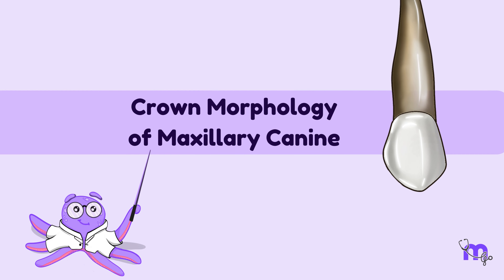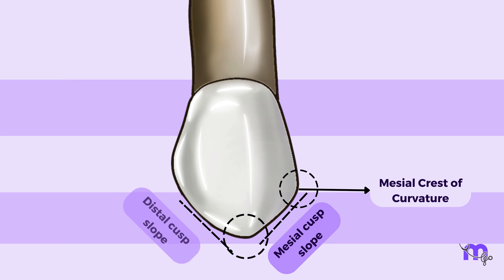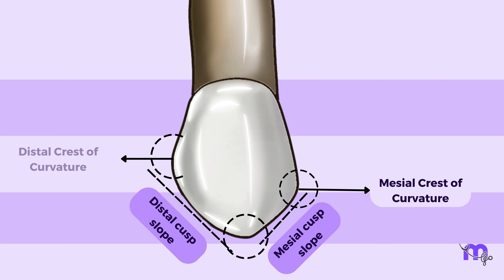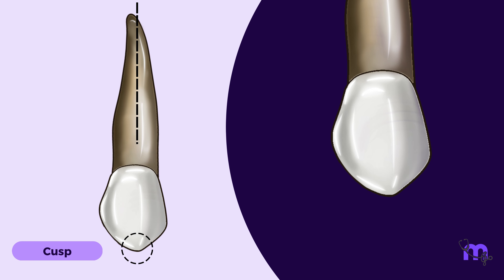Canines can be categorized as two maxillary and two mandibular canines situated at the corners of the mouth. They are the longest teeth in the dental arch, nearly 25–27 mm from crown to root tip. The tooth develops from four lobes, with a highly developed middle lobe giving rise to a single prominent cusp. Due to their unique crown shape, they possess a self-cleansing property. This quality, combined with the labiolingual thickness of the crown and root, along with secure anchorage in the alveolar process of the jaws, makes them the most stable teeth in the mouth.